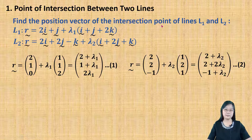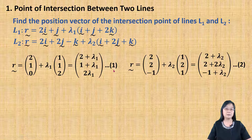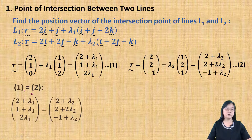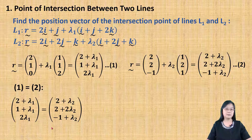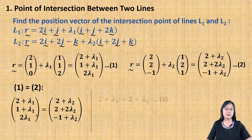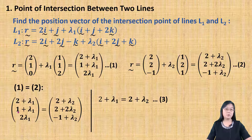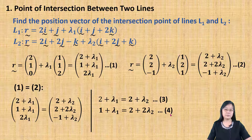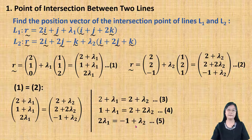So, in order to find the intersection point, I'm going to do simultaneous equations. Now, I equal equation 1 with equation 2, then I get the equation here. From here, I can get 3 linear equations. There are: 2 plus λ1 equals 2 plus λ2, and I name it as number 3. Then, the second one: 1 plus λ1 equals 2 plus 2λ2, and I name it as number 4. Then, number 3: 2λ1 equals negative 1 plus λ2, and I name it as number 5.